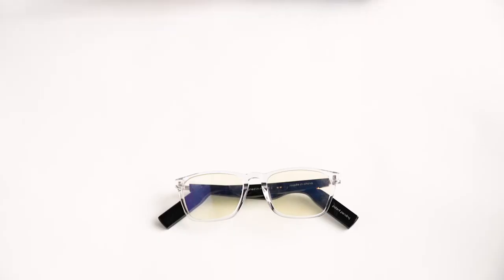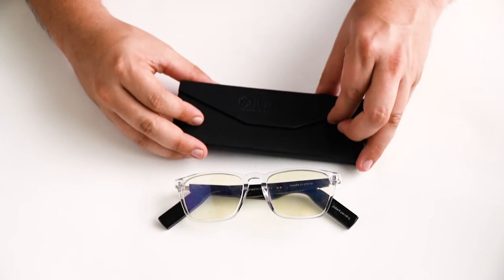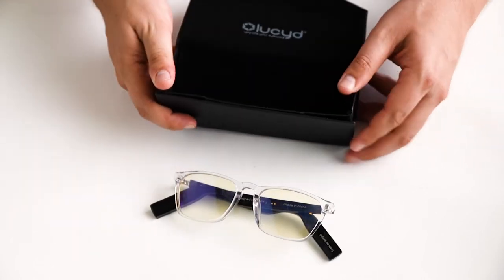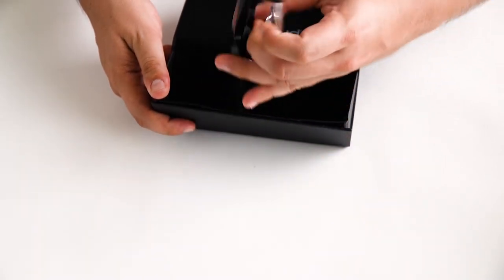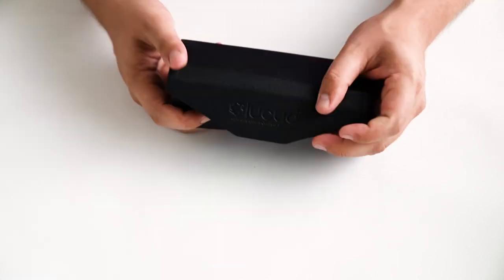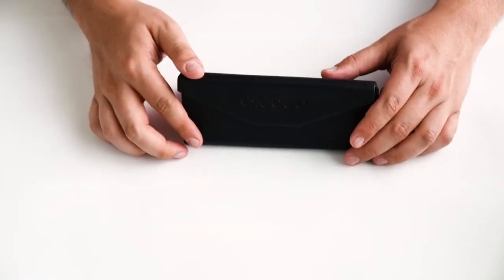Now I'll show you how to store your LucidLight in the included case. First take the case and open it up like so. Then insert the glasses upside down with the lenses facing away from you. Then just close the case like that and the magnet will keep it shut.